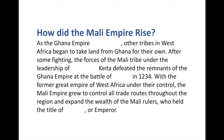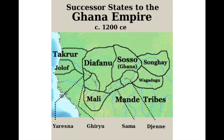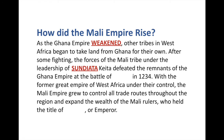How did the Mali Empire arise? As the Ghana Empire weakened around the year 1200, the other tribes began to fight and take territory, towns, and trade routes from them — those are the successor states. The Mali Empire, under the leadership of Sundiata Keita in the south, managed to take control and overrun the Ghana Empire at the Battle of Kirina in the year 1234 — pretty easy to remember. With the former great empire of West Africa under their control, the Mali Empire grew to control all of the trade routes throughout the region.